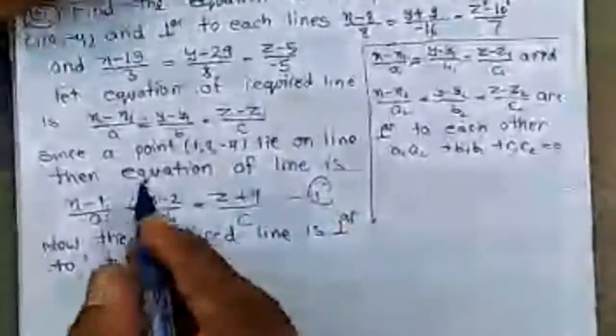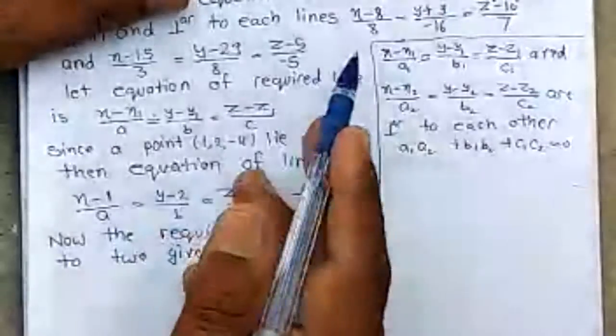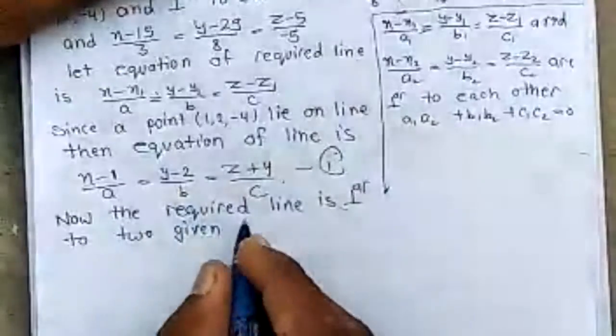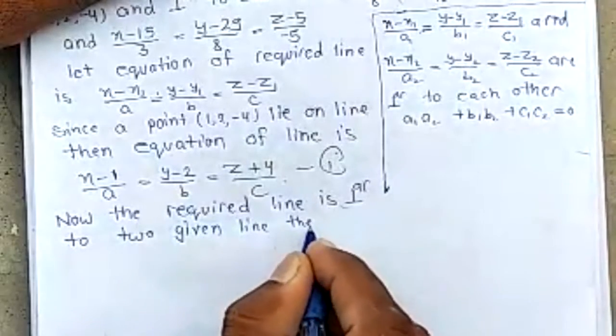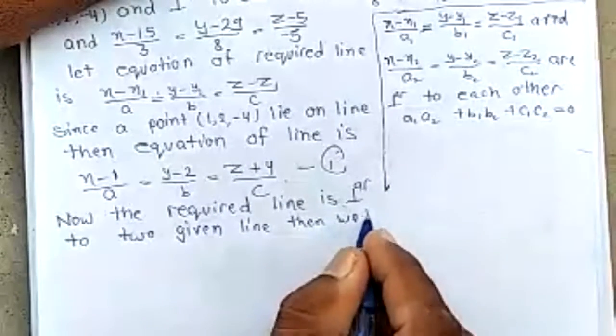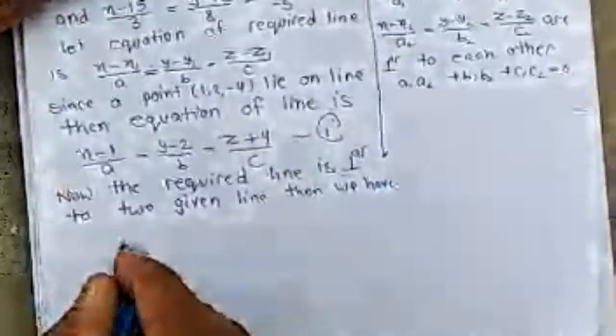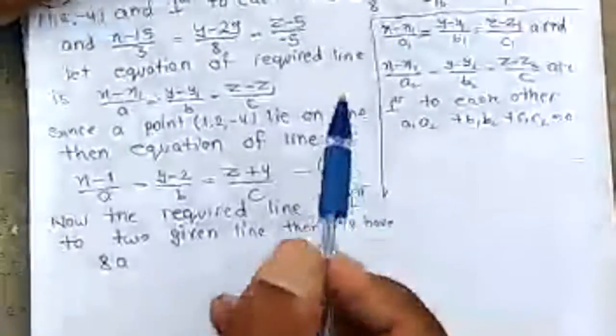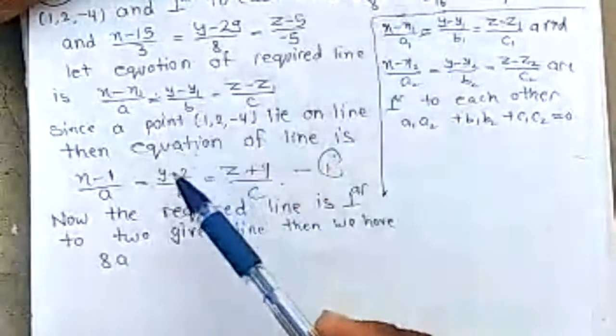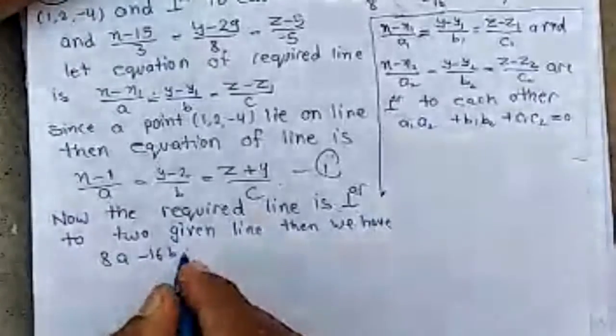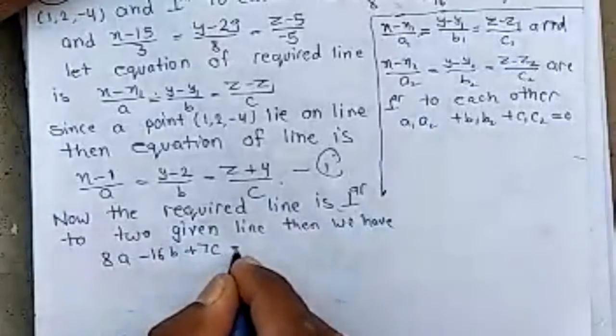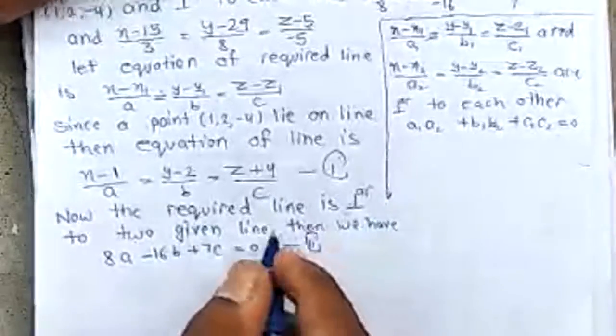If line 1 is perpendicular to this line, then we have 8 into A minus 16 into B plus C equals 0. So it is the second equation.